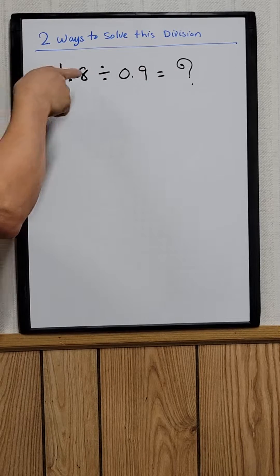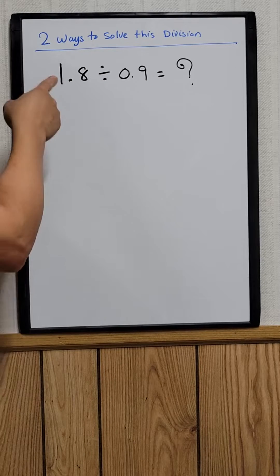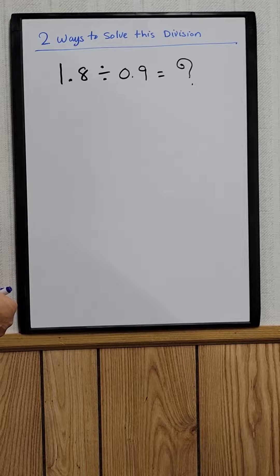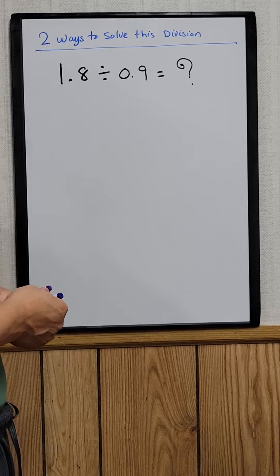There are two ways to solve this division problem. For example, 1.8 divided by 0.9.